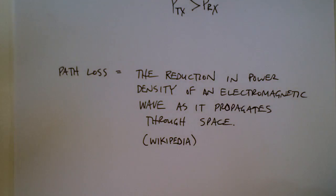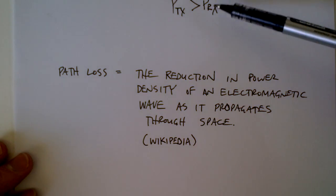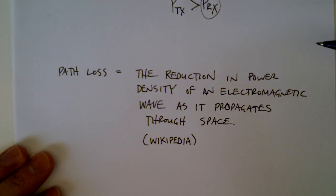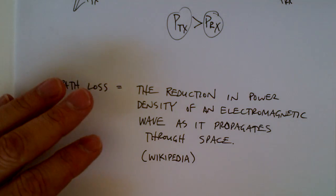So again, path loss is the reduction in power density because it will be reduced. The power you get here will be less than the power you get here.